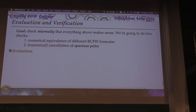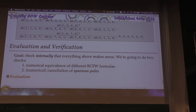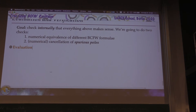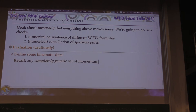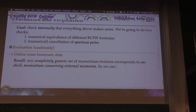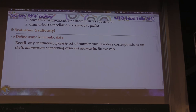For evaluation, this is where everything becomes dangerous — we're forced to tell Mathematica what an angle bracket is. As soon as we do that, it's dangerous. So we want to be very cautious. The first step is to define some kinematic data. We need to introduce some momentum twisters. Recall that any completely generic, randomly generated set of momentum twisters corresponds to on-shell momentum-conserving external momenta.